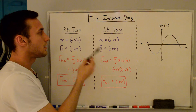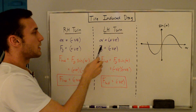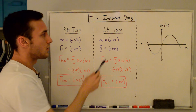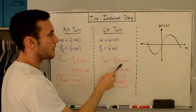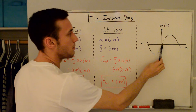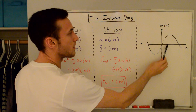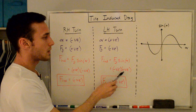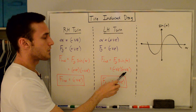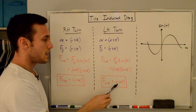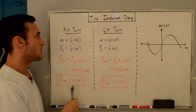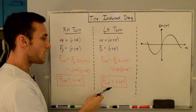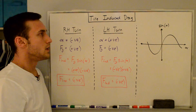For a left-hand turn, similarly we have a positive slip angle, which produces a negative lateral force. A positive slip angle gives us a positive value for sine of the slip angle. So a negative lateral force times a positive sine of the slip angle gives us a negative induced drag — same as the right-hand turn. The signs of the induced drag work out in both cases.